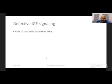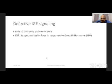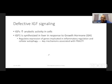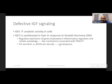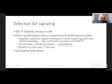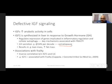Insulin-like growth factors are responsible for increased anabolic activity in cells. IGF is synthesized in the liver in response to growth hormone and regulates expression of genes implicated in inflammatory regulation and cellular autophagy — two key mechanisms associated with frailty. Growth hormone secretion decreases at the rate of almost 14% per decade, leading to a state of somatopause, resulting in a decrease in lean mass and an increase in fat mass. There is an inverse correlation between IGF-1 and IL-6, and decreased IGF-1 has been found in frail individuals, also associated with sarcopenia.